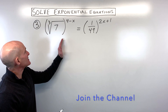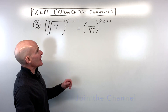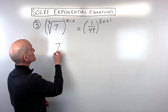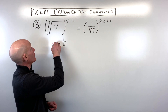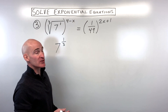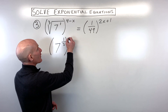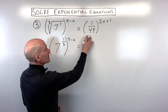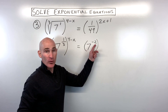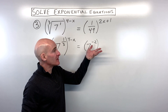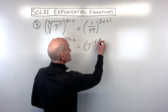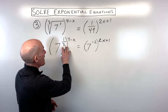For this last example, to get the bases the same, seven looks like a good choice. This cube root of seven can be written as seven to the one third power — the root or index goes in the denominator, the power goes in the numerator as a rational exponent. Over on the right side, one over forty-nine is really seven to the negative two power, because seven squared is forty-nine and the negative tells us to take the reciprocal.